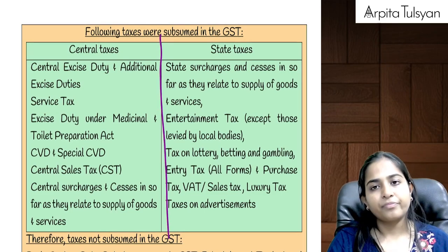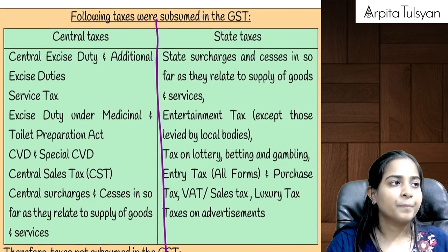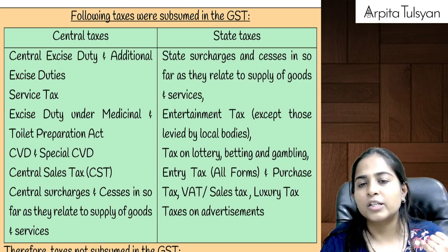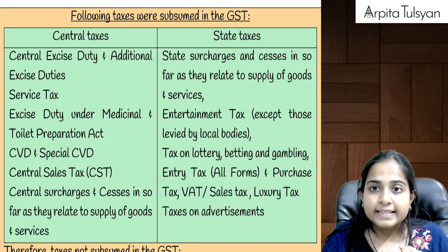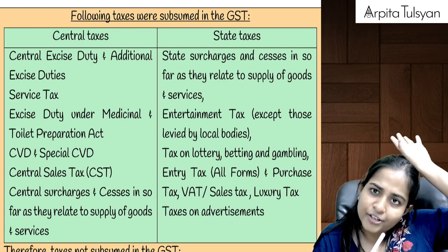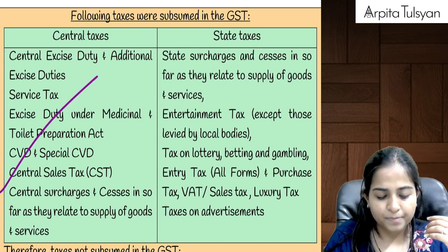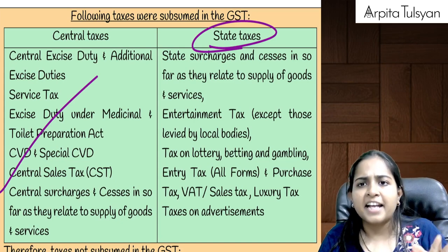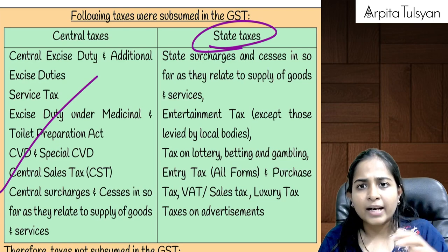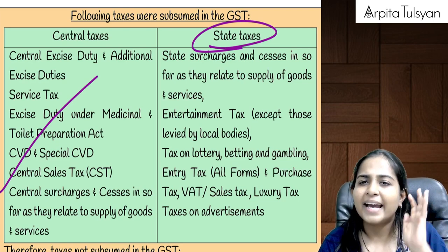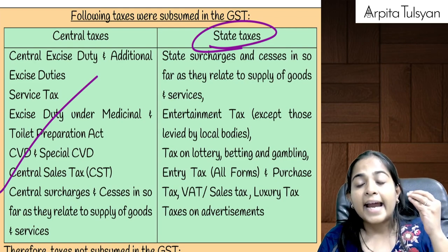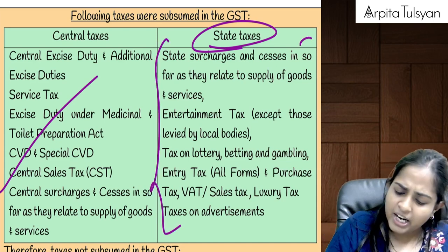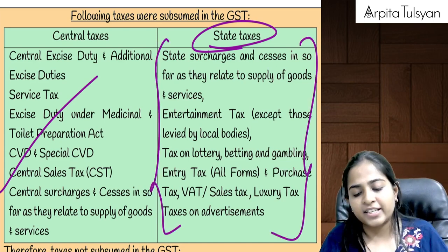Which taxes got subsumed? In central taxes: excise duties got subsumed, service tax got subsumed, CST got subsumed, and all the surcharge and cess under the old law got subsumed. In state taxes: VAT got subsumed, entry tax, purchase tax, tax on advertisement, tax on betting, lottery, gambling, etc., and entertainment tax by the state government — all got subsumed. All surcharge and cess under the old law got subsumed.